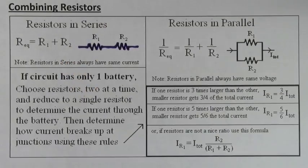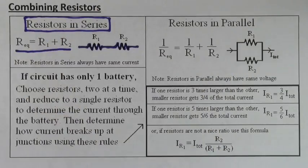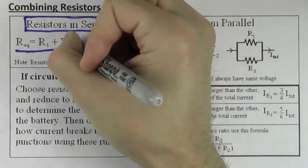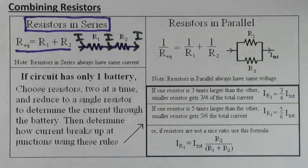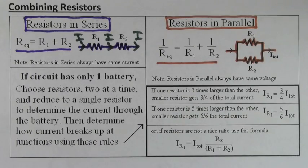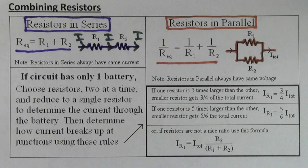You can find the total resistance for resistors in series just by adding them up. Resistors in series must have the same current. For resistors in parallel, you have to do 1 over R total equals 1 over R1 plus 1 over R2. The total resistance for resistors in parallel will always be smaller than either of the two resistors — in other words, adding a resistor in parallel decreases the total resistance.